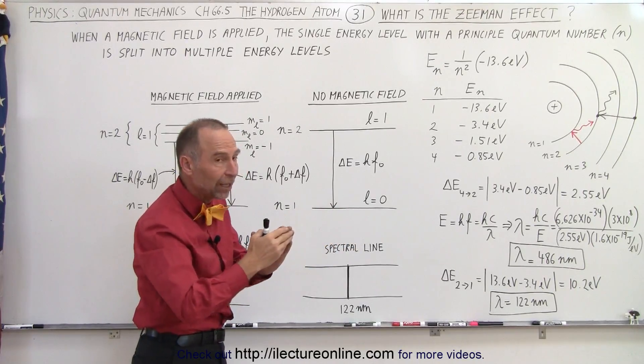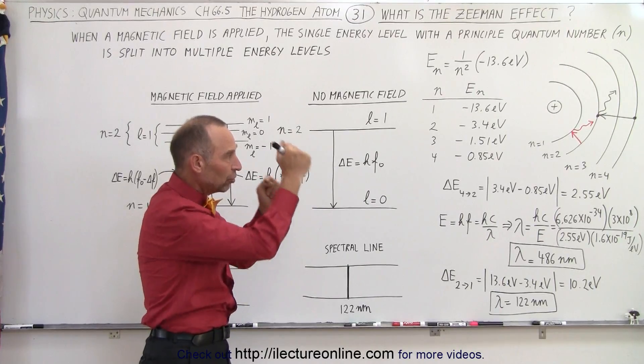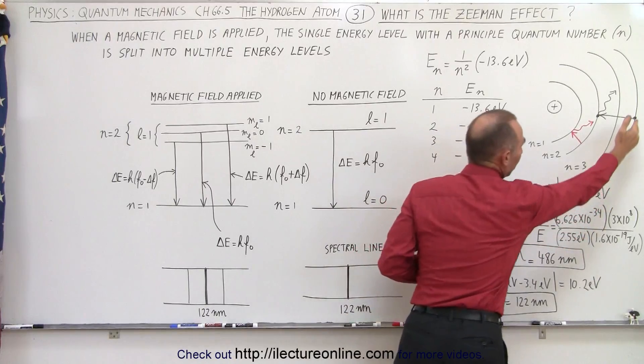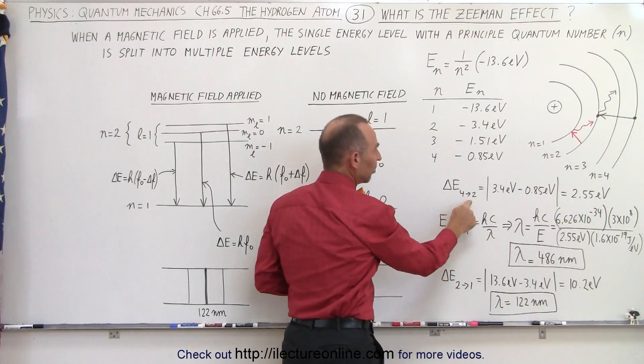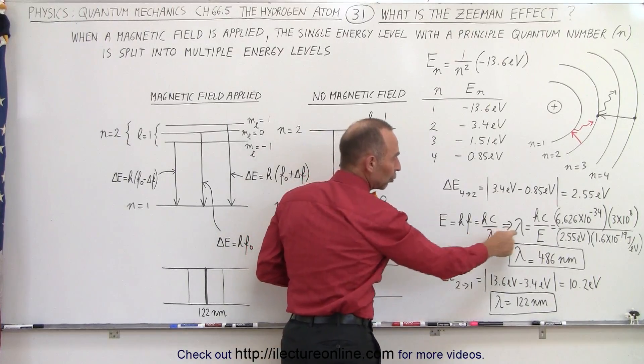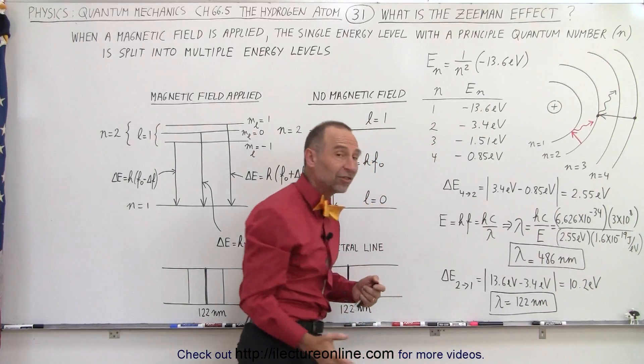When electrons jump between those, they emit a photon that has an energy equal to the difference of those levels. For example, when an electron jumps from the fourth level down to the second level, the difference in energy is 2.55 electron volts. When we calculate the wavelength of that photon, we see it's about 486 nanometers.